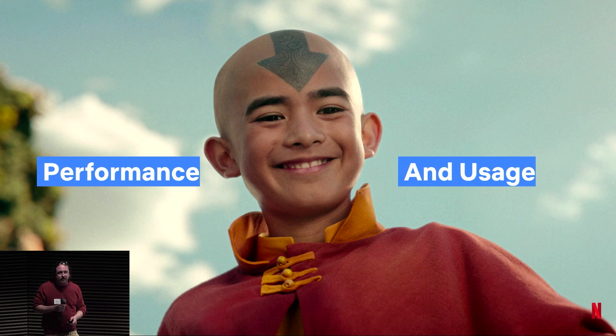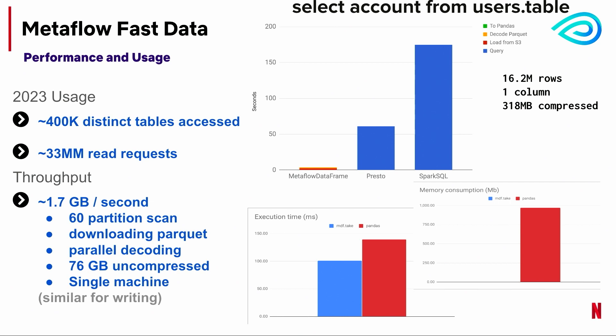Let's talk about performance and how much this thing gets used at Netflix. Looking at 2023 usage: it's heavily used in the Metaflow side of the house — 400k distinct tables accessed. A lot of people create temporary tables and then read the data back in through Metaflow, using the best of Spark to create a temporary table and then the best of Metaflow to pull it into your process. 33 million read requests for tables, because we're using a lot of horizontal scaling to process large tables in parallel. On a single process, we get about 1.7 gigabytes per second — and that's not just file download, that is discovery, file download, and decoding end-to-end.